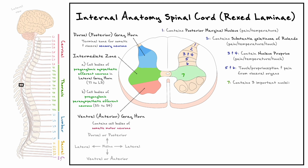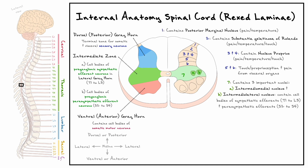Moving on to lamina 7, it is the only lamina corresponding to the intermediate zone. It has three particular nuclei: the intermediolateral nucleus and intermediomedial nucleus, which contain the cell bodies of preganglionic sympathetic (T1–L3) and parasympathetic (S2–S4) efferents. The third nucleus is Clarke's column, which deals with processing of proprioception and is only present from C7 to L3.